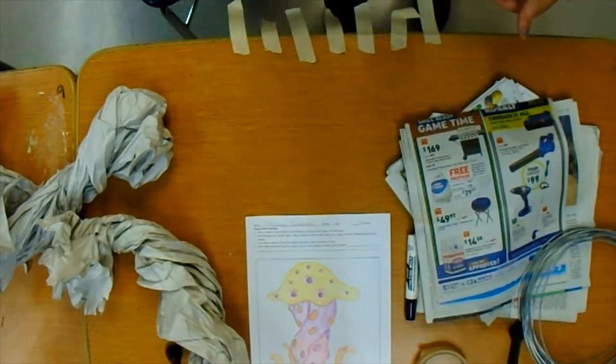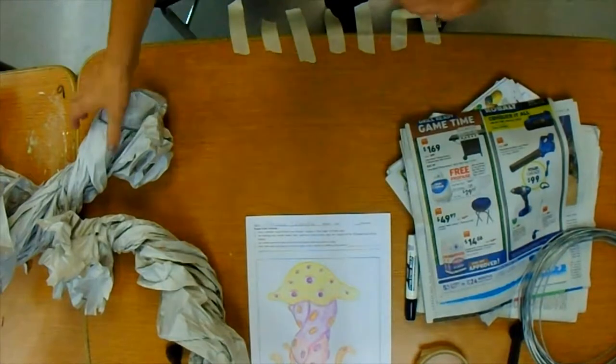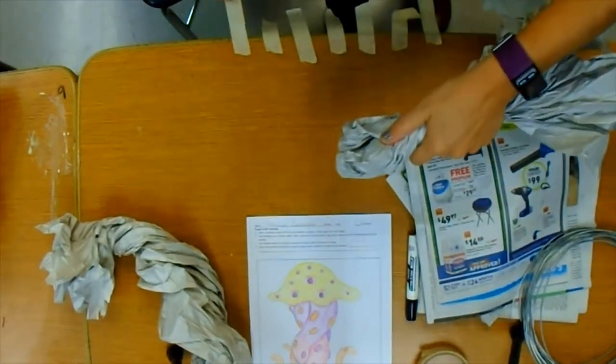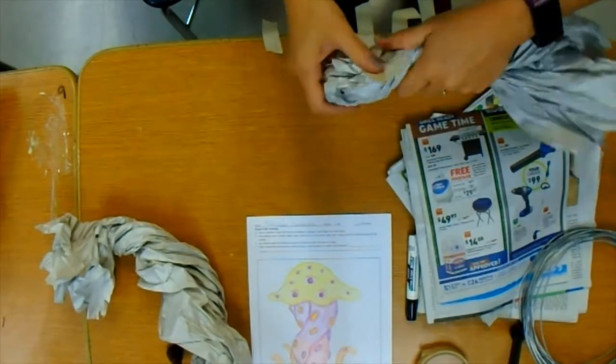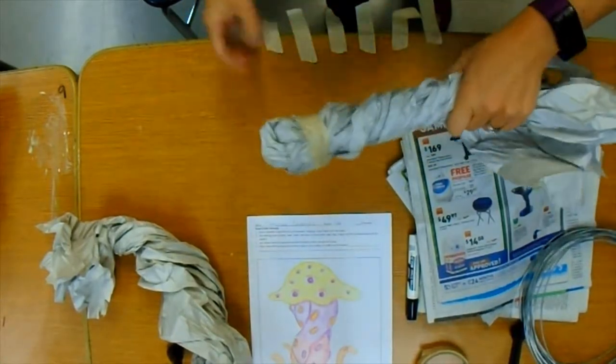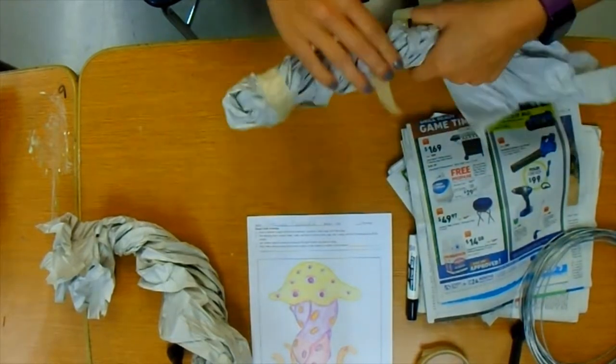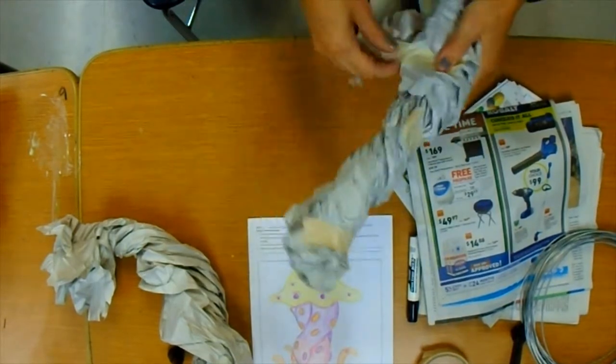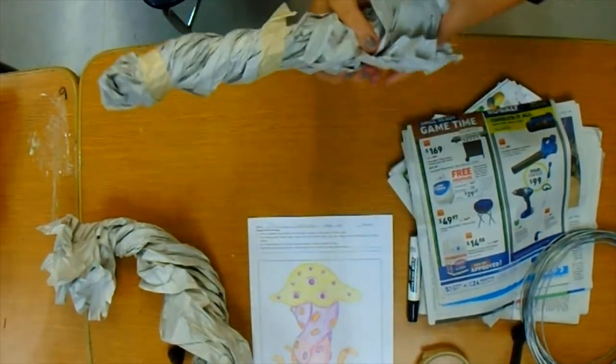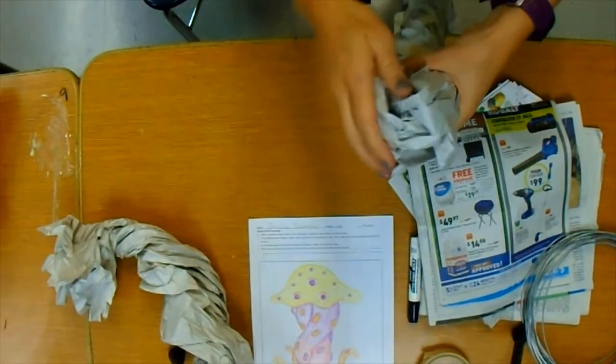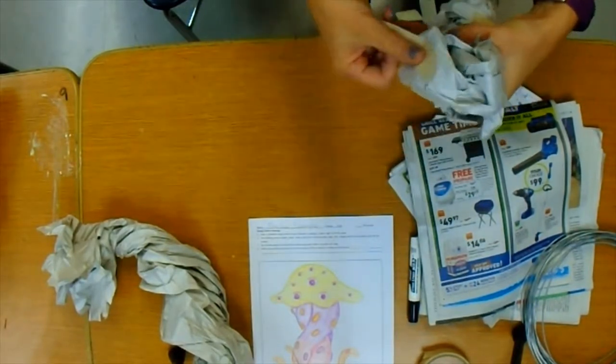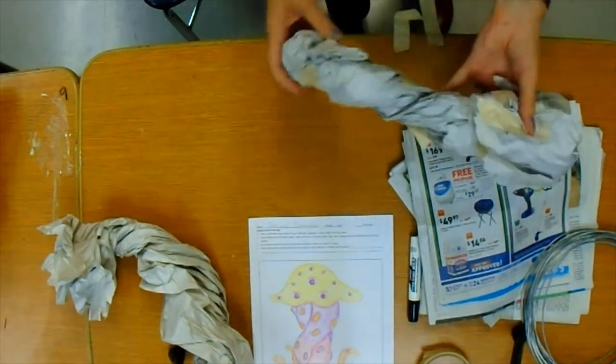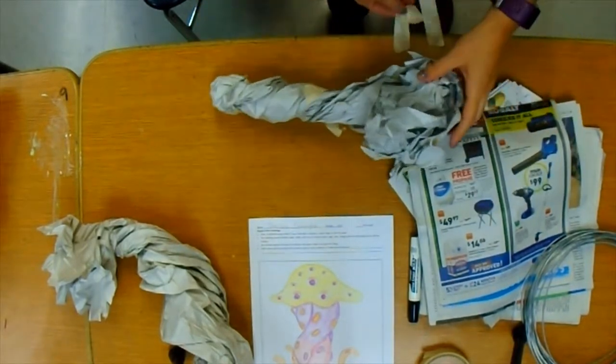So, I'm going to twist this and then I'm going to lay a piece of tape over the edge to hold that twist. I'm just going to do that in a couple of spots. Okay, so now, I need to decide how wide and thick do I need to get the tentacle.